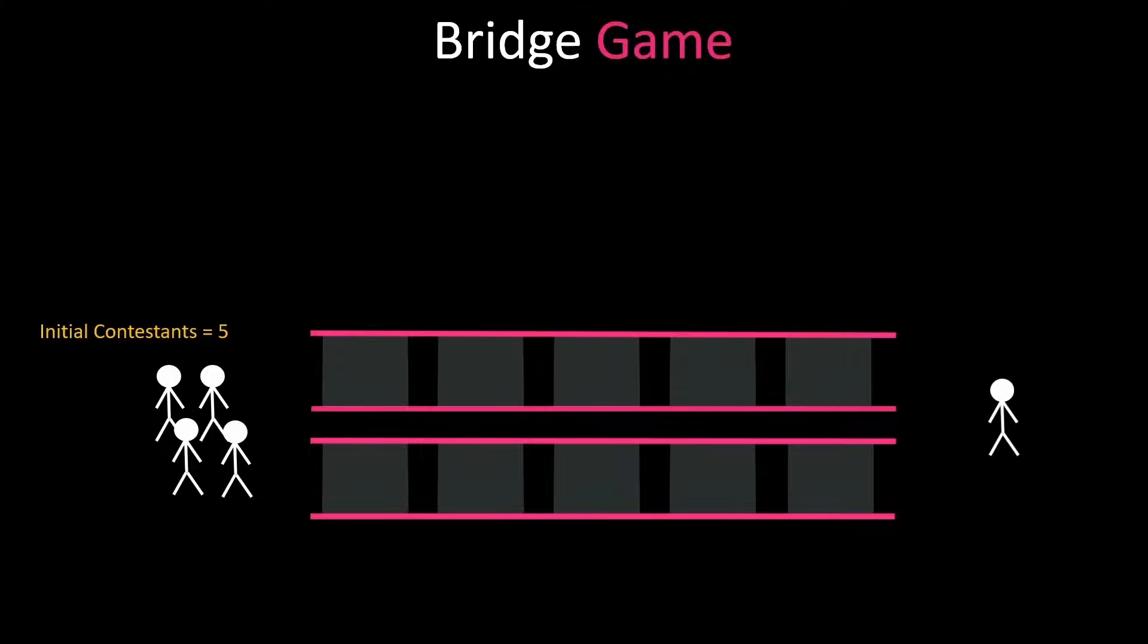Next on each jump there are two glass panels. One will break when weight is put on it and the other one will stay intact. In other words the probability of us losing a contestant on each jump is one half. Conversely this also means we have a one half probability of not losing a contestant on each jump.